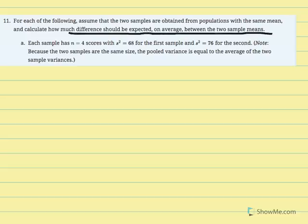Part A: each sample has equal size of 4, with variance of 68 for the first sample and variance of 76 for the second. Since the two samples are the same size, the pooled variance equals the average of the two sample variances. Because variance was given instead of sum of squared deviations, we'll use the alternate pooled variance equation. Ultimately, we need pooled variance to calculate the estimated standard error of the mean difference.